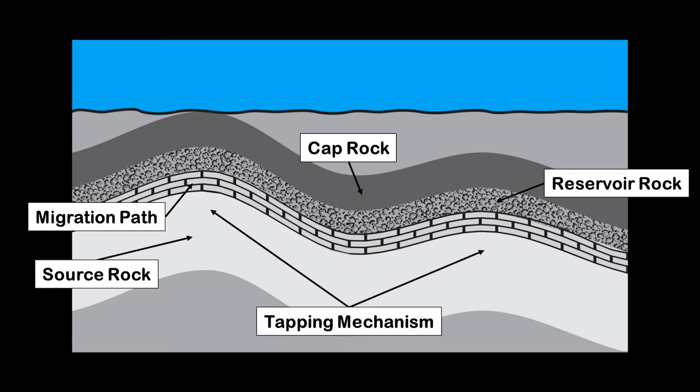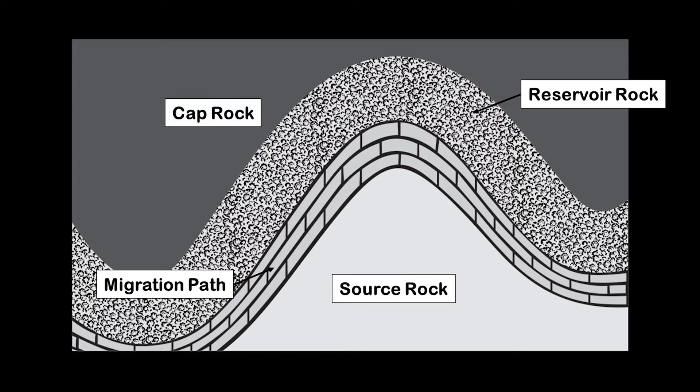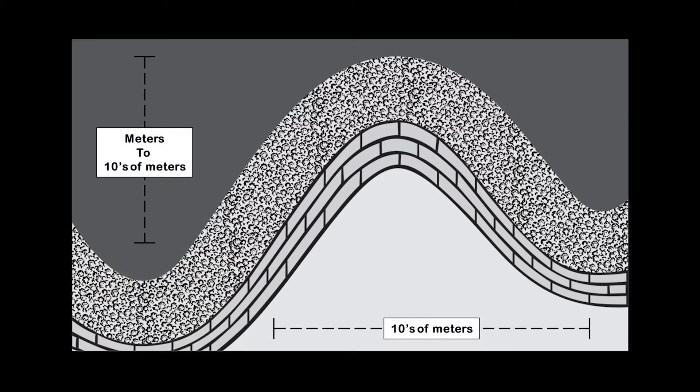Our look at basic definitions of traps starts with a simple structural anticlinal trap. This single anticlinal system has all the features needed for hydrocarbons to be found. For basic reference, a typical system would be on the scale of meters to tens of meters depending on location.